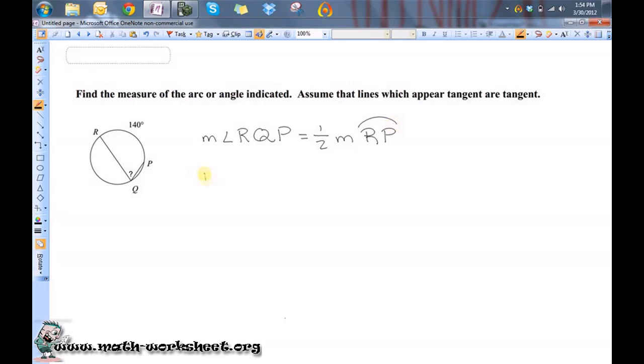The measure of angle RQP is equal to one-half of 140, so it's equal to 70 degrees. This is 70 degrees in here.